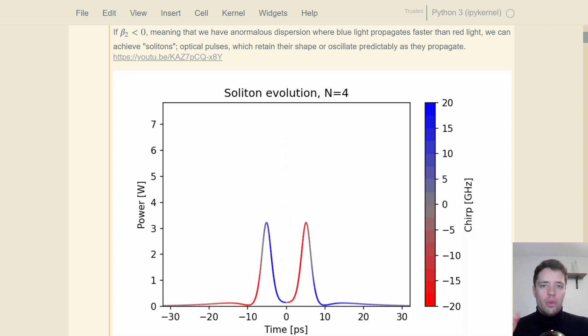In a previous video, which should be linked right up here, we discussed solitons, which are these interesting pulses that can arise in optical fibers with a nonlinearity and a negative beta-2 dispersion parameter. In those situations, if the pulse has a sufficiently high power, it's possible for the effects of self-phase modulation and negative group velocity dispersion to perfectly cancel out, at least if the pulse has a hyperbolic secant envelope. If the pulse is even more powerful, it's possible for it to oscillate back and forth, as we're seeing in this animation right here.